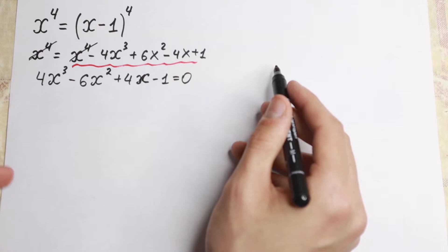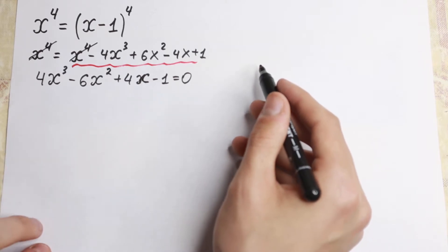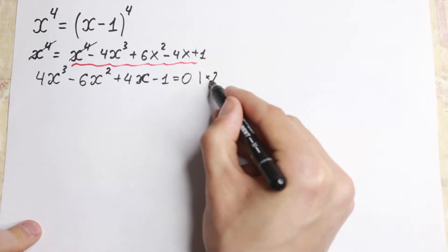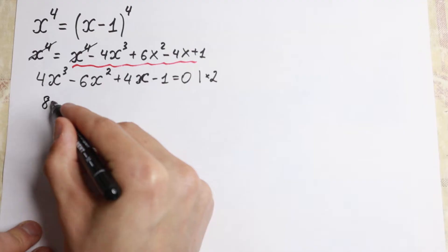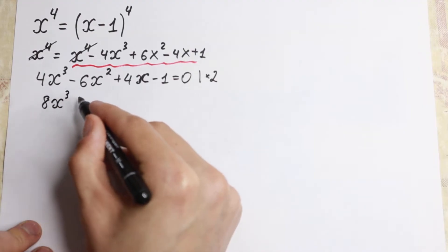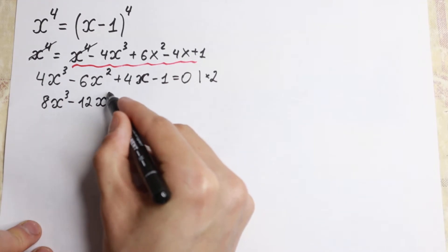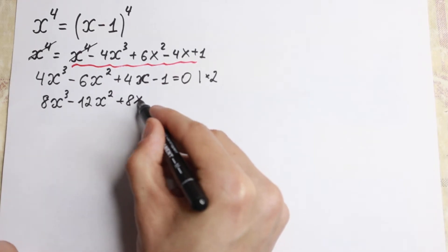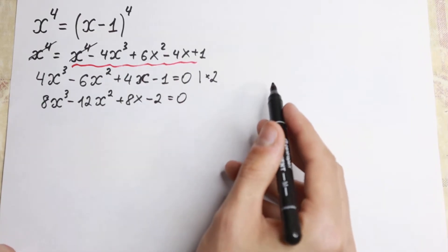There are a lot of methods to solve this cubic equation. I'm going to show you a really good trick. If we multiply the entire equation by 2, we will have 8x cubed minus 12x squared plus 8x minus 2 equal to 0.